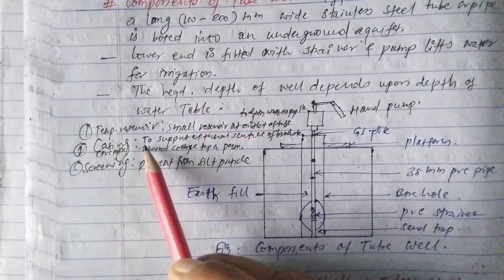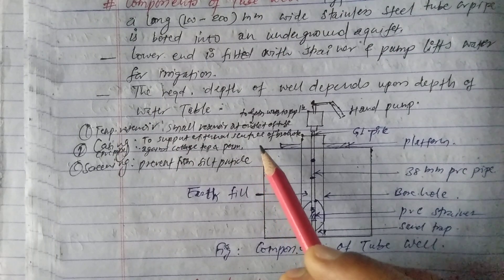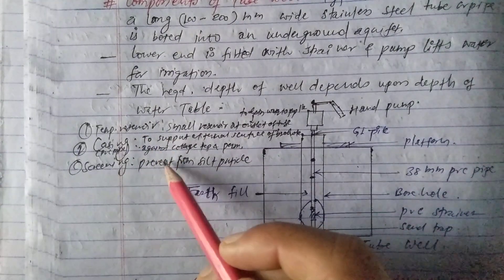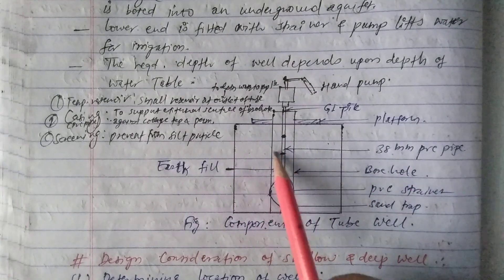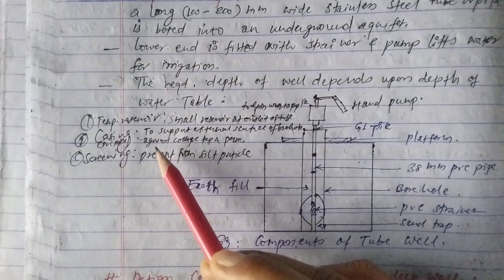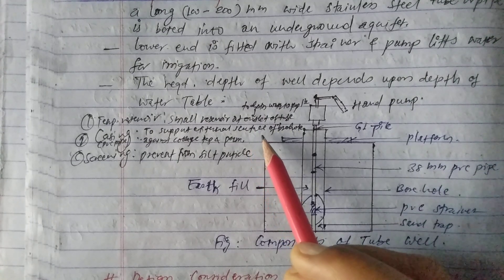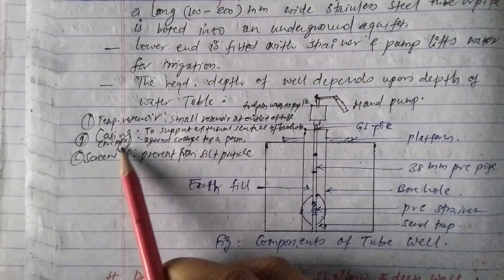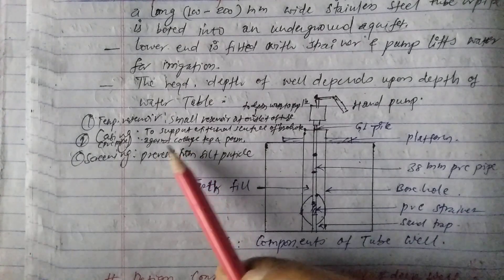A temperature reservoir is a small reservoir at the outlet of the tube for distribution of water to the population — that is called the temperature reservoir. Second, casing and PVC pipe: the PVC pipe is provided to support the external surface of the borehole against collapse. This is also called the casing.